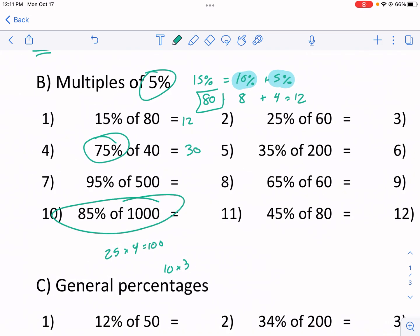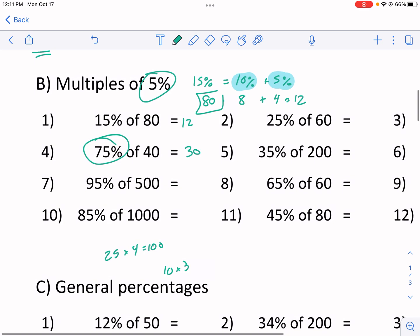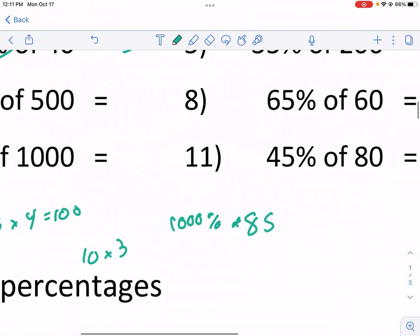I'm trying to look for any others that have a math hack. 85% of 1,000. That might be a good one to flip. So we have 1,000% of 85. That one might be easy because we just multiply by 10. And if I multiply 85 times 10, I'm just adding a 0. So that's going to be 850.